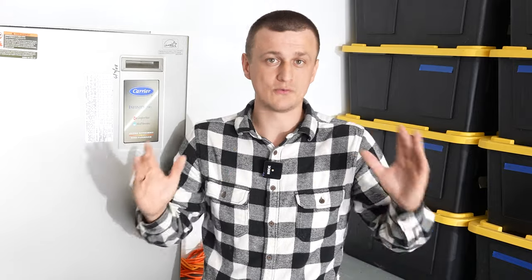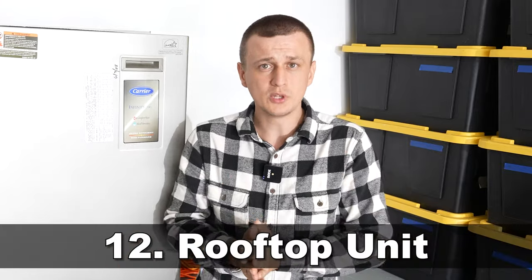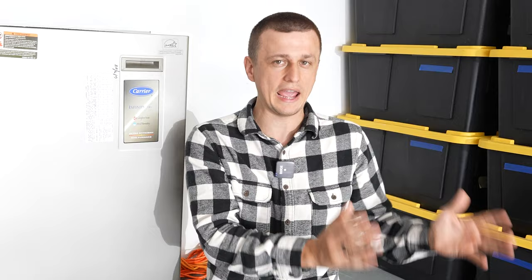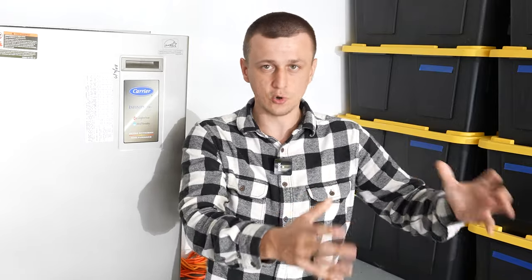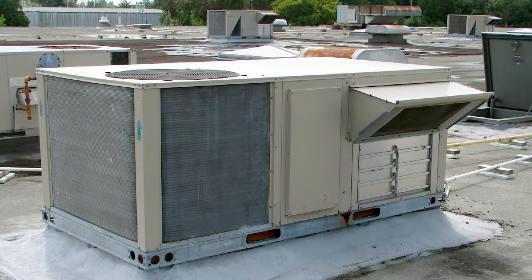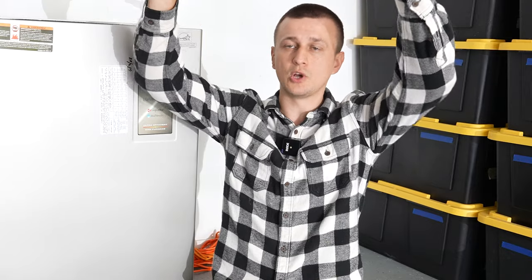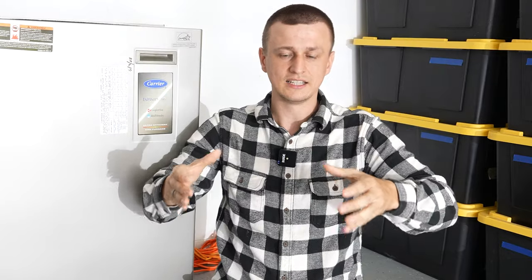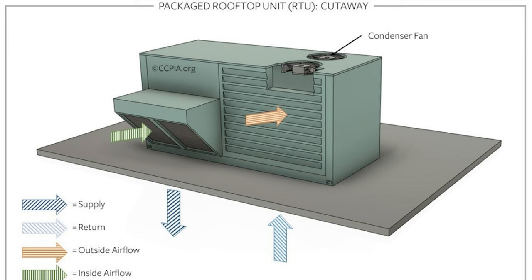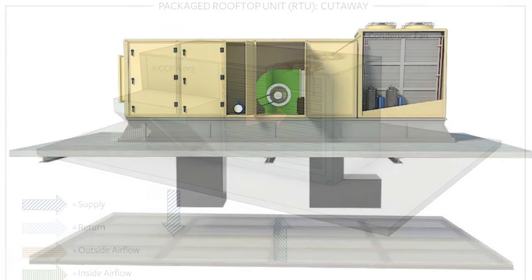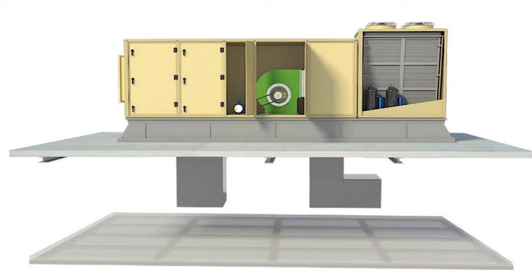Next up, we have rooftop units. A rooftop unit is pretty much the same exact thing as a packaged unit, except they take this whole big box and put it on top of the roof. This is the most common setup in commercial buildings, stores, or restaurants, so they have everything on top of the roof. The only thing going inside is the ductwork — a return going down and a supply going down. There are no fans or anything inside; it's all up on top of the roof.